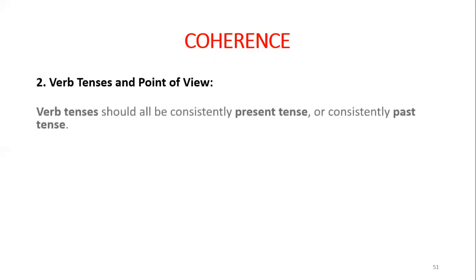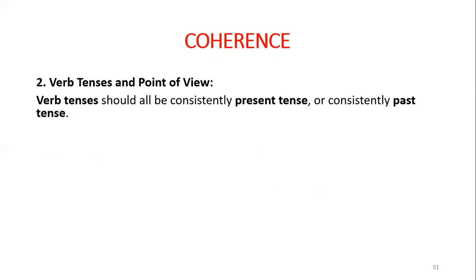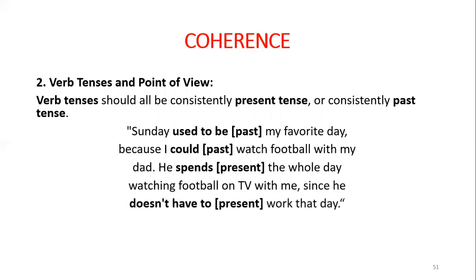Talking about verb tense: verb tense should all be consistently present tense or consistently past tense. So if your paragraph is talking about the past, all verb tenses must be in the past. If you're talking about something in the present, all verb tenses must be in the present tense. For example: 'Sunday used to be my favorite day because I could watch football with my dad' — this is past tense — but then 'he spends the whole day watching football on TV with me since he doesn't have to work that day' — this is present tense. So this is not unified in tense.